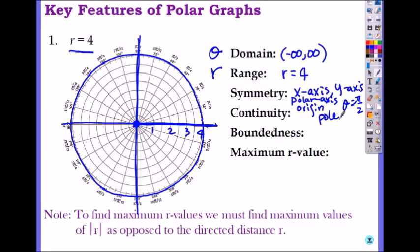What about continuity? Yes, there's no discontinuity, so it is yes. And boundedness, it doesn't go to positive infinity, neither negative infinity for r, so it is bounded both below and above. So if you say bounded, it means it's both bounded above and below. And the maximum r value will be 4.